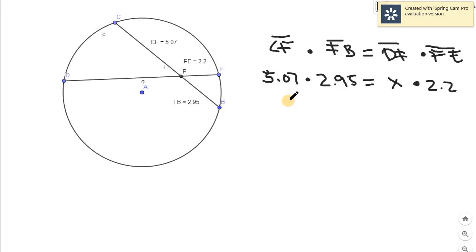5.07 times 2.95 equals 14.9565, exact. And x times 2.2, we transpose 2.2, it would become divided by 2.2 equals x. This one divided by 2.2 gives us a value of x equals 6.798.